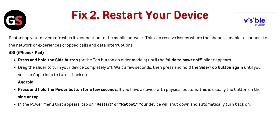For iOS, iPad or iPhone, press and hold the side button or the top button on older models until the slide to power off slider appears. Drag the slider to turn your device completely off. Wait a few seconds, then press and hold the side or top button again until you see the Apple logo to turn it back on.